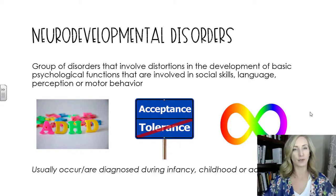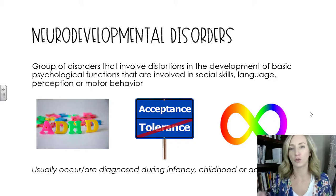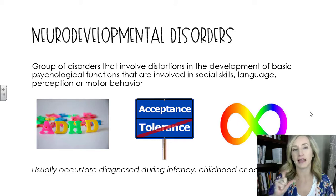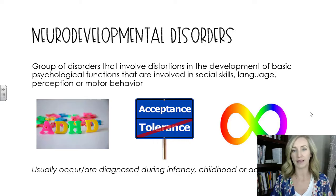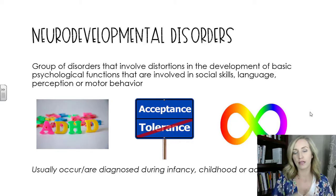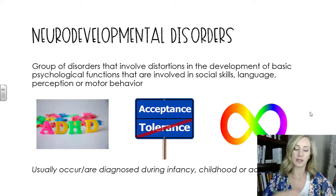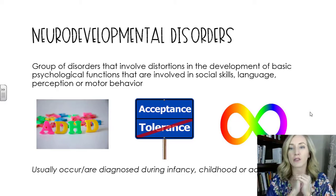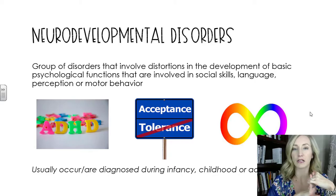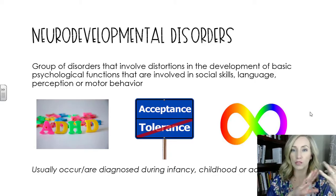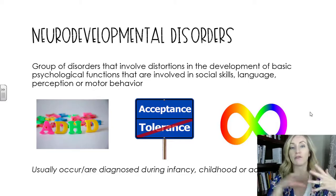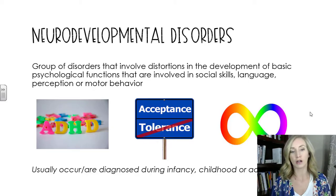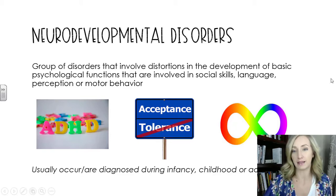Neurodevelopmental disorders is that group of disorders that involve distortions in development. They recently added the 'neuro' prefix with the DSM-5 because there is such a genetic basis for it, and it's something biologically altering that has happened, whether in utero or due to an environmental factor. So distortions in the development of basic psychological functions involved in social skills, language, perception, or motor and physical behavior. These usually occur and are diagnosed during infancy, childhood, or even adolescence.